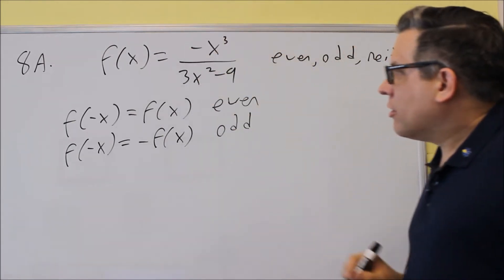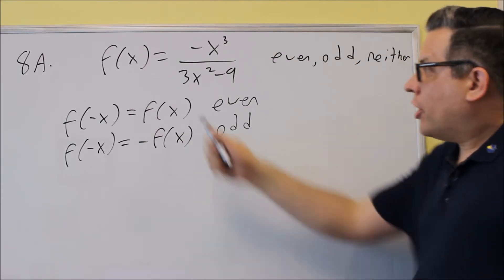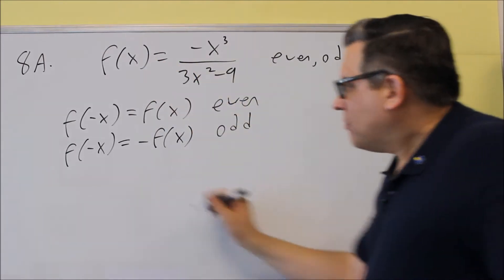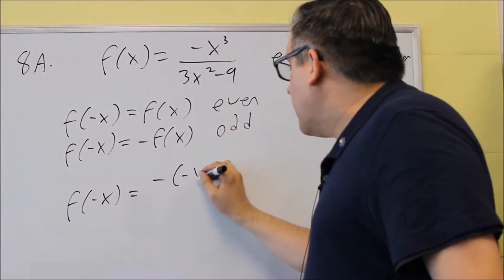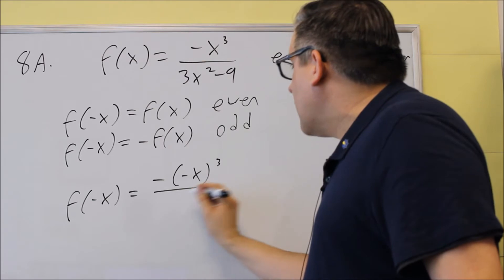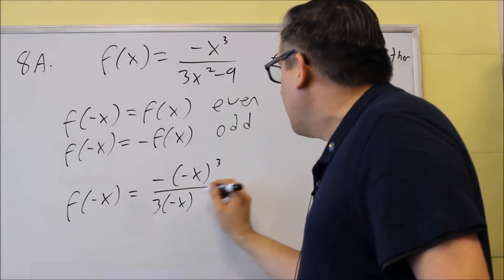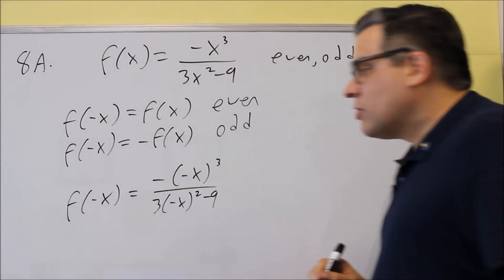Okay, so for this one right here, we want to go ahead and put in a negative. We want to find out what f of negative x is. So, I have negative. I put negative x in there for all the x's, just like that.